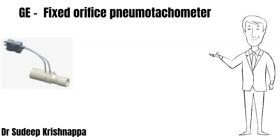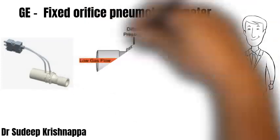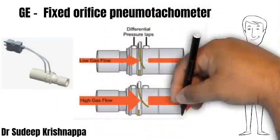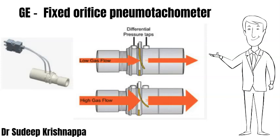The picture on the far side of the slide shows the actual pneumotachometer. The white tube-like structure houses the orifice across which the pressure drop happens. The two tubes leading away from the system help in measuring the pressure on either side of the orifice, thereby measuring the pressure drop and the flow. The second picture shows a cross-section through the pneumotachometer device, showing an orifice in orange and the direction of gas flow.